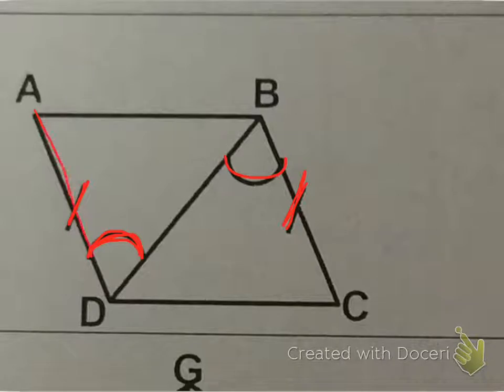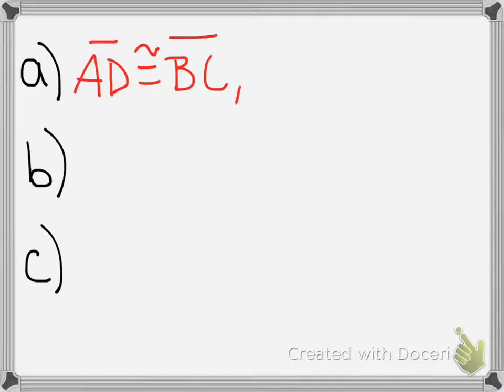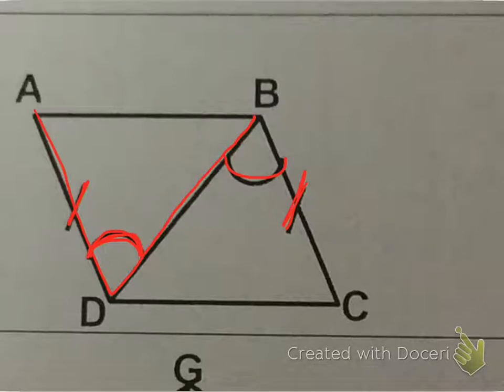So I want to avoid just saying angle D, and instead I want to actually label this angle by three points. So this is angle ADB. Angle ADB. And it is congruent to angle DBC.